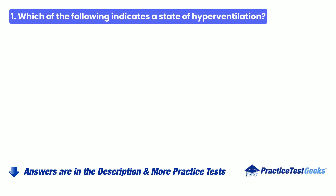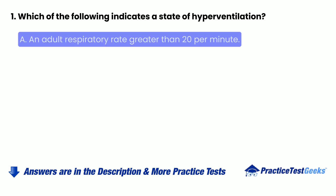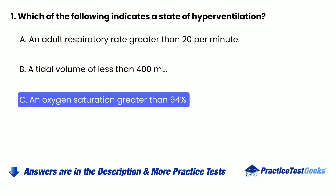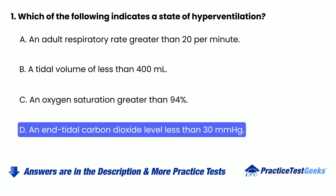Question 1: Which of the following indicates a state of hyperventilation? A. An adult respiratory rate greater than 20 per minute. B. A tidal volume of less than 400 milliliters. C. An oxygen saturation greater than 94%. D. An end-tidal carbon dioxide level less than 30 millimeters of mercury.